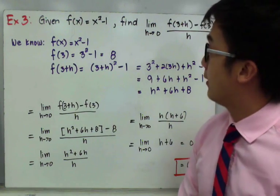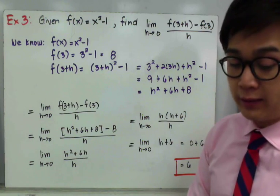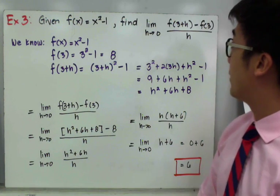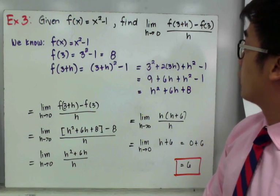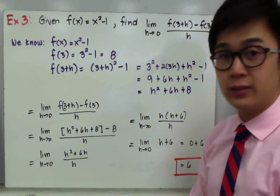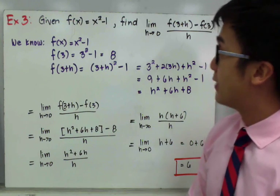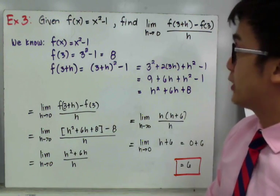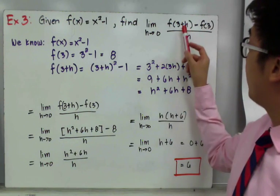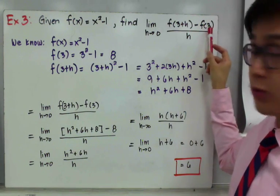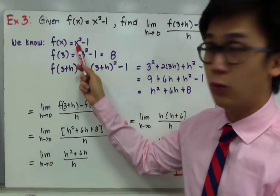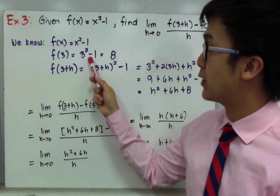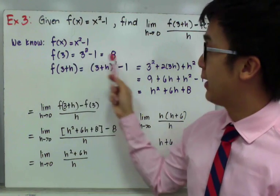For our last example, we have f of x equal to x squared minus 1, and we need to evaluate the limit of f of 3 plus h minus f of 3, all over h, as h approaches 0. This is applying the difference quotient rather than the general derivative formula. We set up by finding f of 3: replacing x with 3 gives us 3 squared minus 1, which equals 8. So f of 3 equals 8.